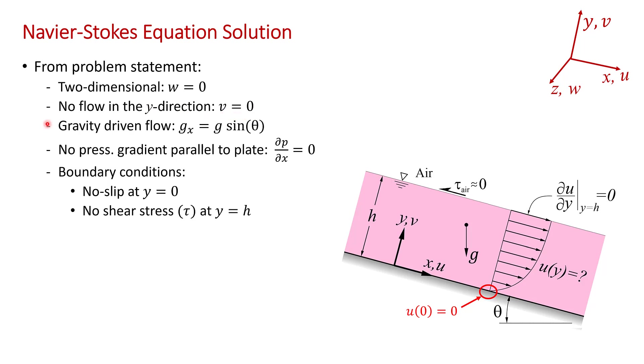This is a gravity-driven flow, and gravity acts downward. But notice the coordinate axes here: x is parallel to the plate, and y is perpendicular to the plate. So we need to determine the x and y components of the gravity vector. For a plate at an inclination angle of theta from the horizontal, we can get the y and x components of the gravity vector. You can see that the x component of gravity, gx, is g sin theta.